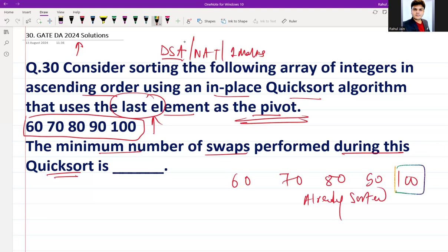It is already at its correct position, so no swapping will be there. After that, this is the remaining array, so the 90 will be the next pivot element. It is also at its correct position, so no swapping.